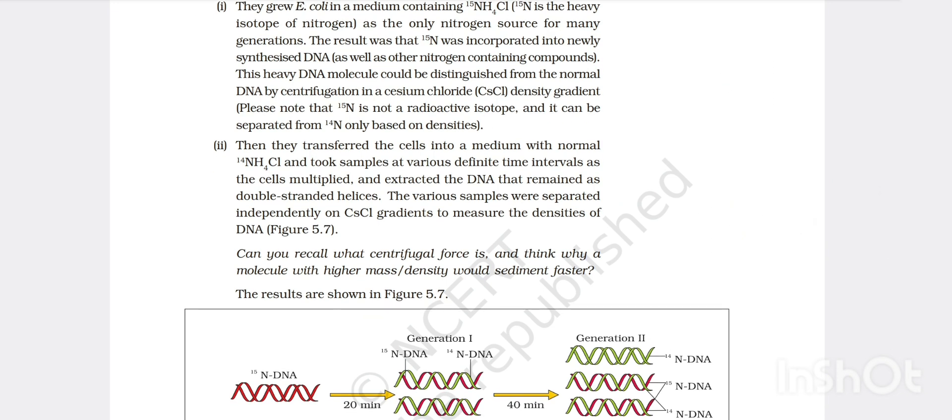Then they transferred the cells to medium with normal NH4Cl where N14 is used in the medium and took samples at various definite time intervals. As the cells multiplied and extracted the DNA that remained as double stranded helix, various samples were separated independently on cesium chloride gradient to measure the densities of DNA.